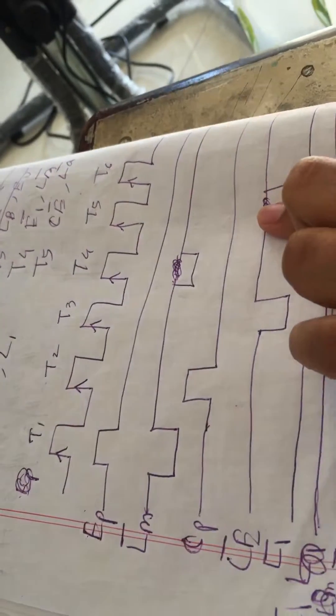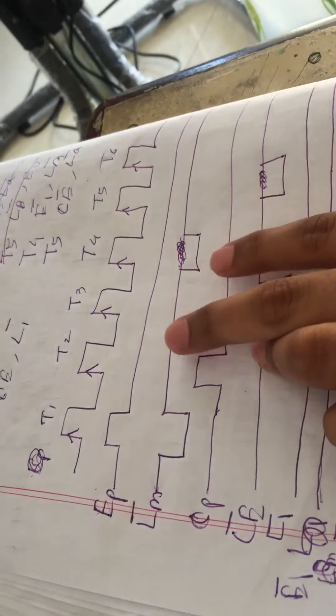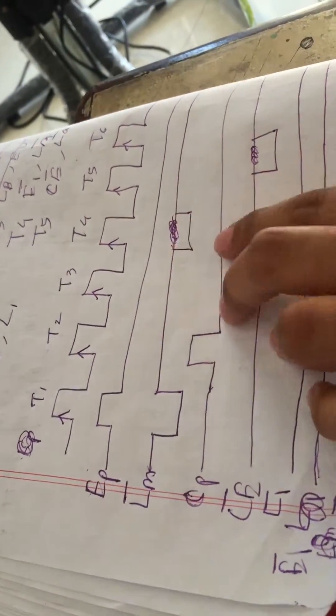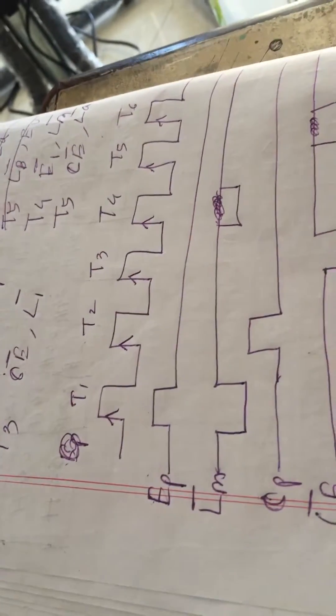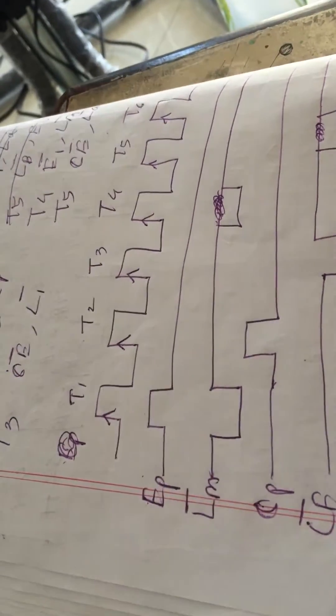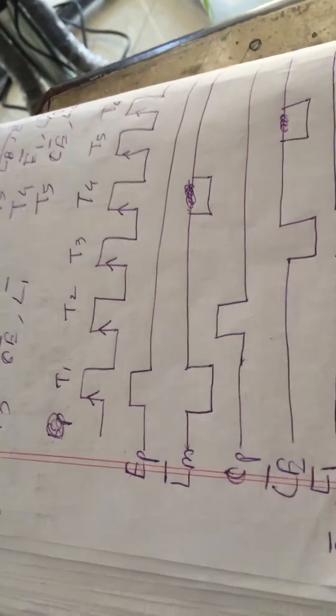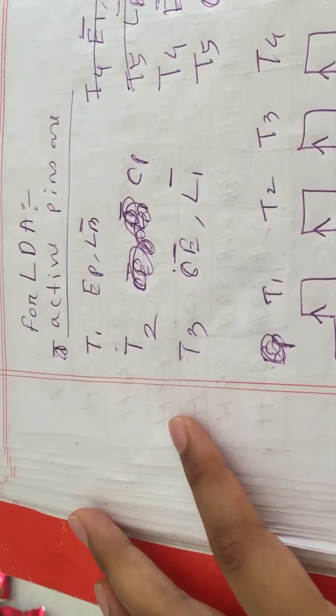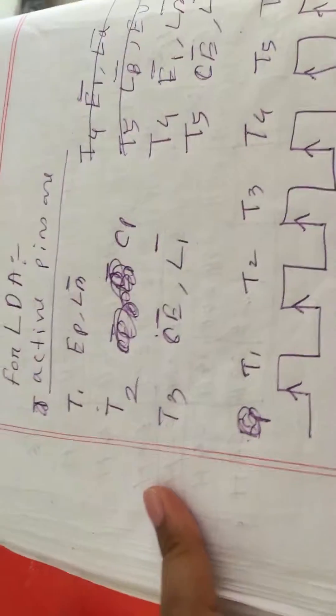And in CE-bar in T5 cycle it's being activated by zero. So in one timing diagram you can show both if there are two times it appears. So this is how you can draw the timing diagram. Thank you.